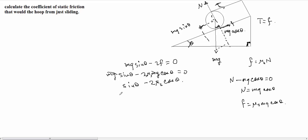So if I move this to the other side of the equal sign, I'm going to have sine of theta equals twice the coefficient of static friction times the cosine of the angle theta.